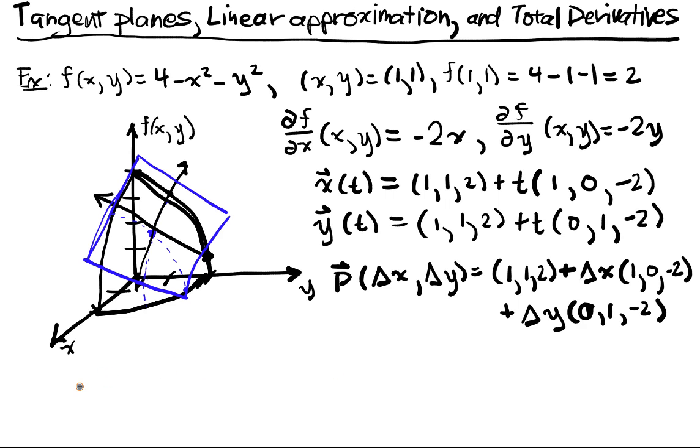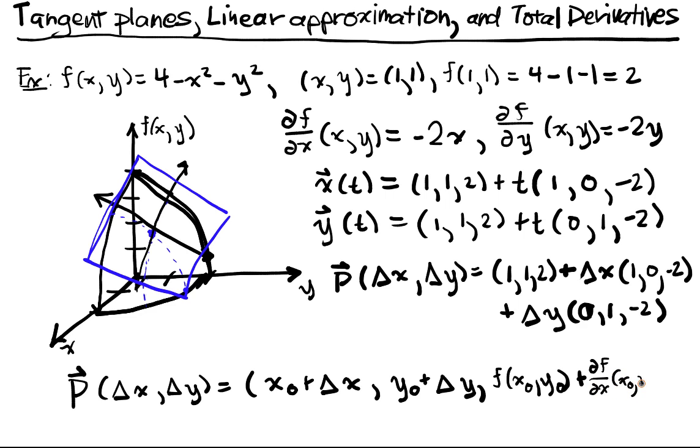Another way to write this, we can see that this is going to be x-naught plus delta x, y-naught plus delta y. And what was this term? This was f of x-naught, y-naught, plus, what was this term? This was df/dx of x-naught, y-naught, and the last part of this component is df/dy of x-naught, y-naught, delta y.